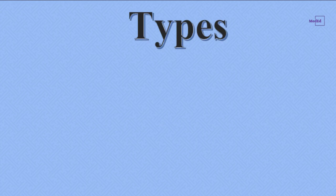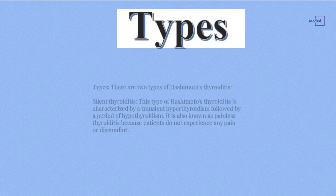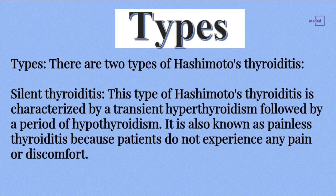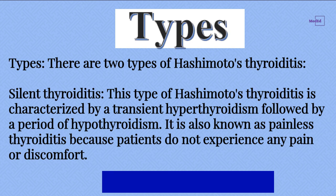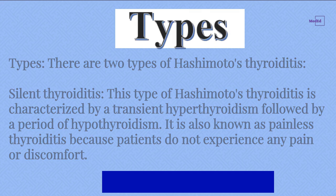There are two types of Hashimoto's Thyroiditis. Silent Thyroiditis is characterized by a transient hyperthyroidism followed by a period of hypothyroidism. It is also known as painless thyroiditis because patients do not experience any pain or discomfort.